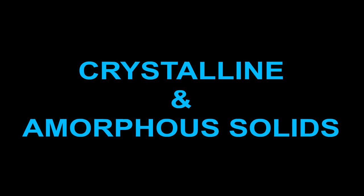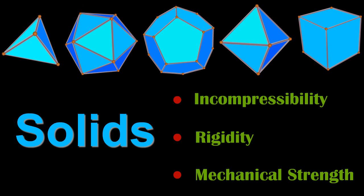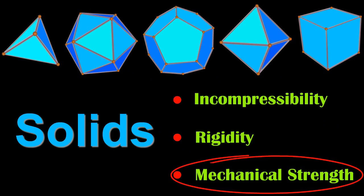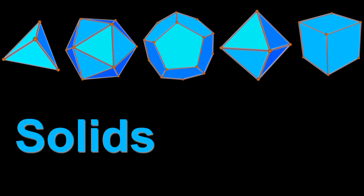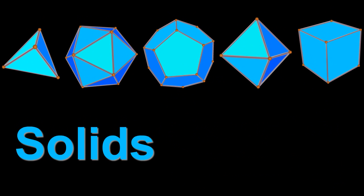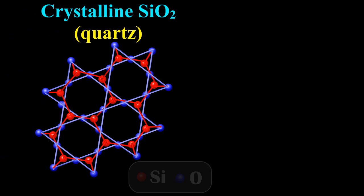Describe the crystalline and amorphous solid with the help of visuals. Solids are characterized by incompressibility, rigidity, and mechanical strength. Solids are usually classified as either crystalline or amorphous.